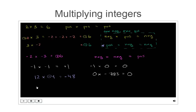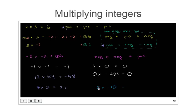What is 7 times 3? This is a bit of a trick — there are no negative numbers here. Positive 7 times positive 3 is simply 21. And negative 5 times negative 10: negative times negative, the negatives cancel out, leaving a positive product of 50.